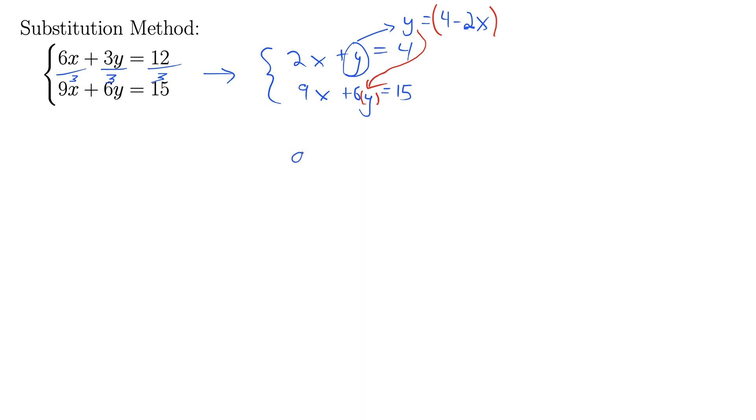Alright, doing that gives us 9x plus 6. Now instead of y, we've substituted 4 minus 2x equals 15. And we just need to solve this equation for x, so let's do it.